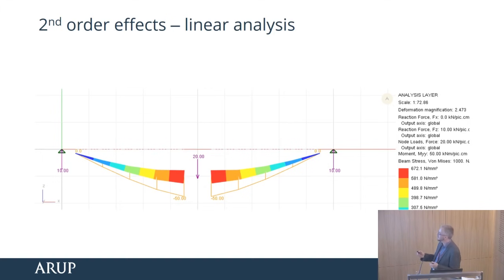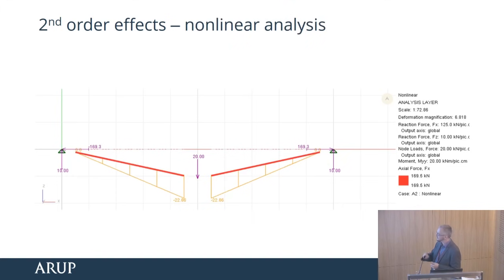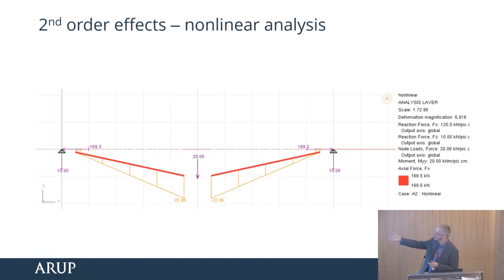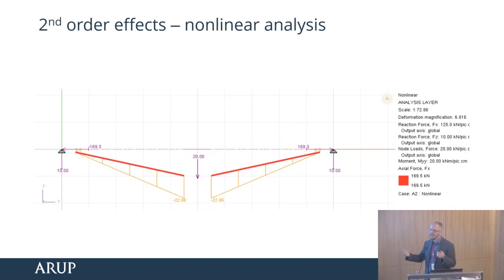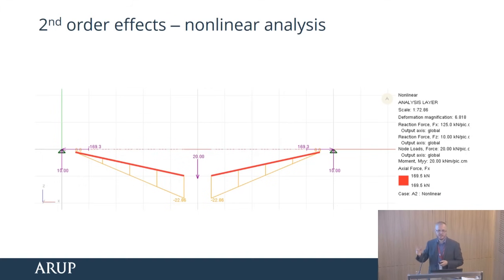We need to change to a non-linear analysis. The beam does yield, and then instead of just getting bending moment, we'll also get an axial load in the structure. If we've got a roller at the end, this beam will actually collapse and you end up with just a hanging cable. So in this situation, we do want those horizontal reactions.